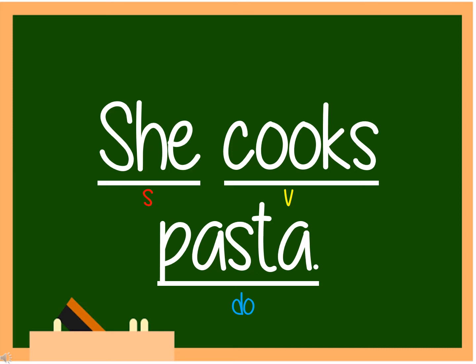Another example: 'She cooks pasta.' She is our subject. Cooks is our verb. And what does she cook? The answer is pasta. So pasta is our direct object.